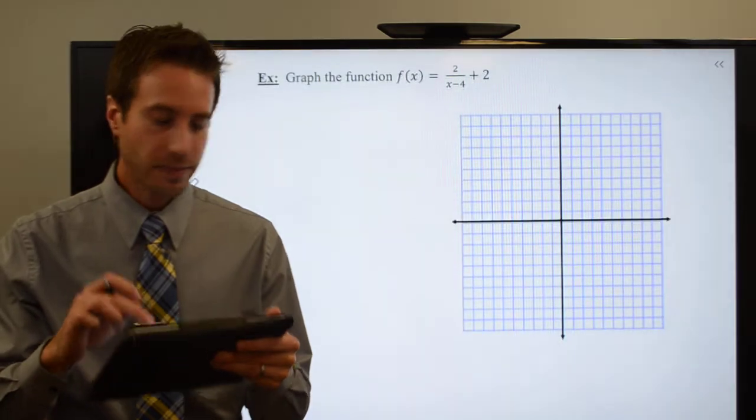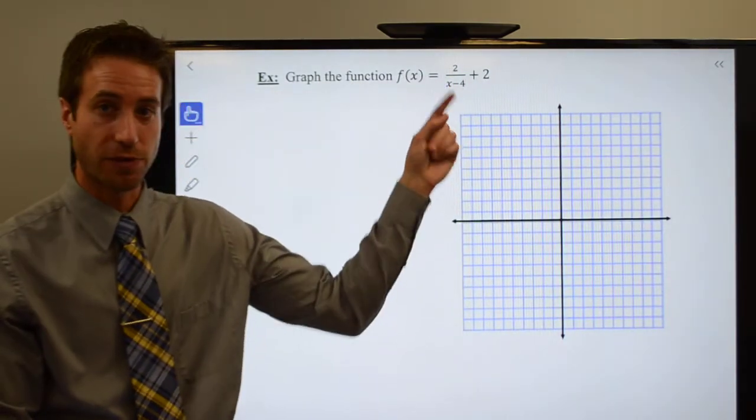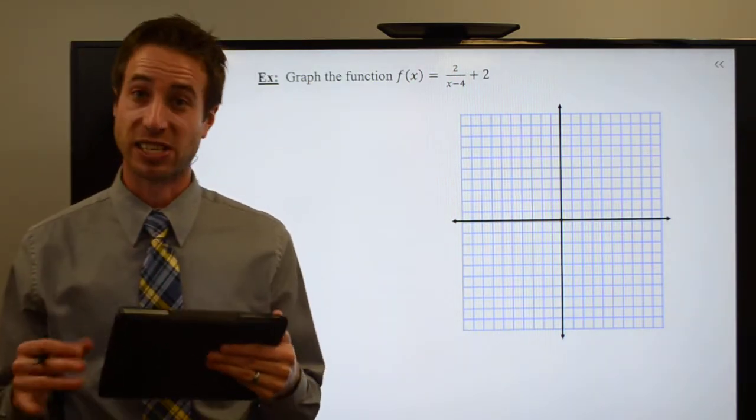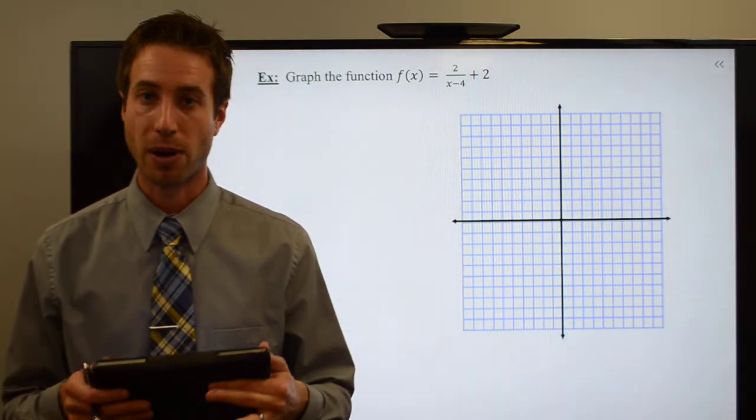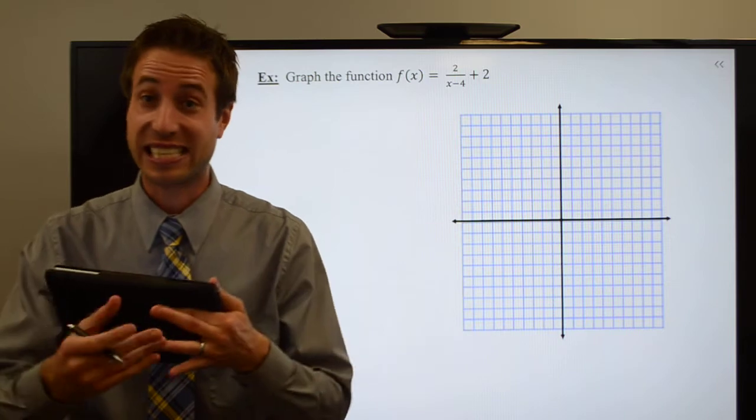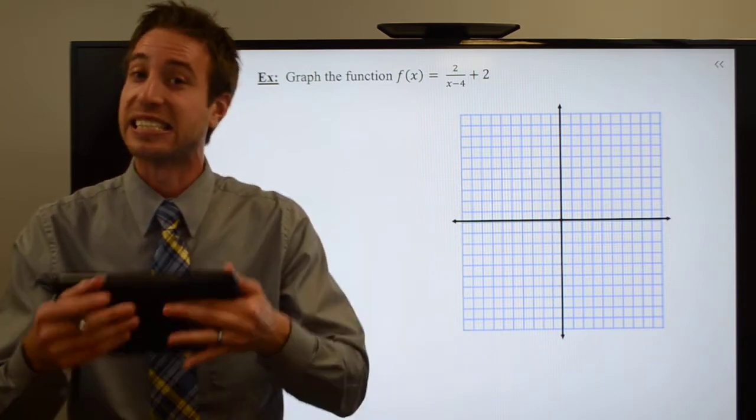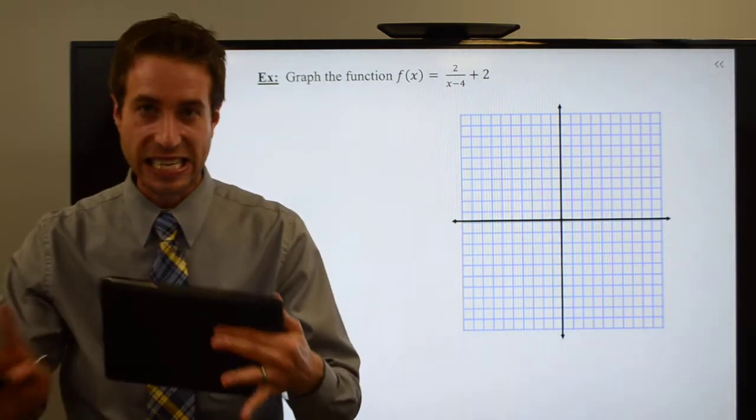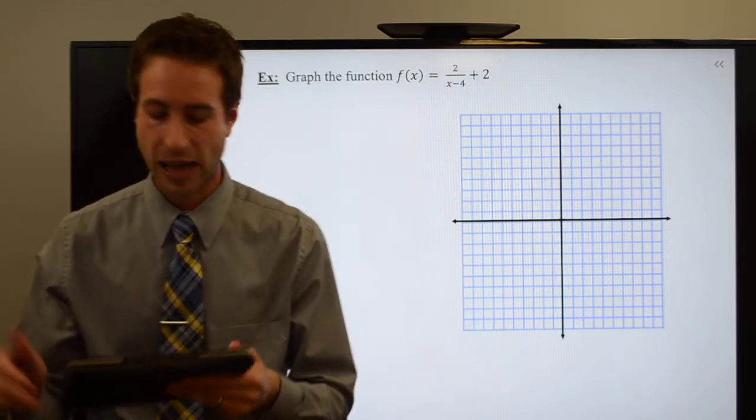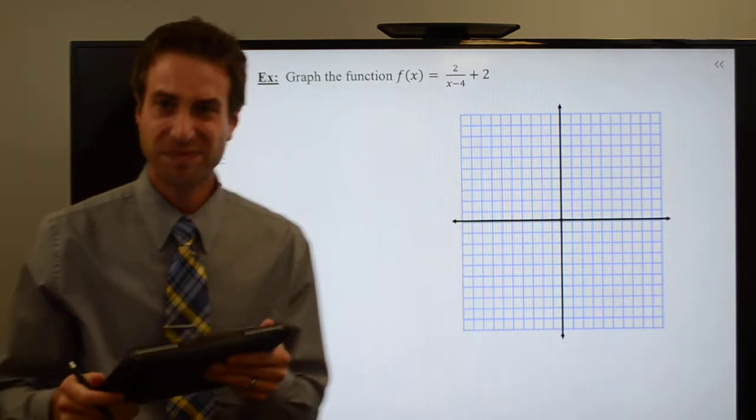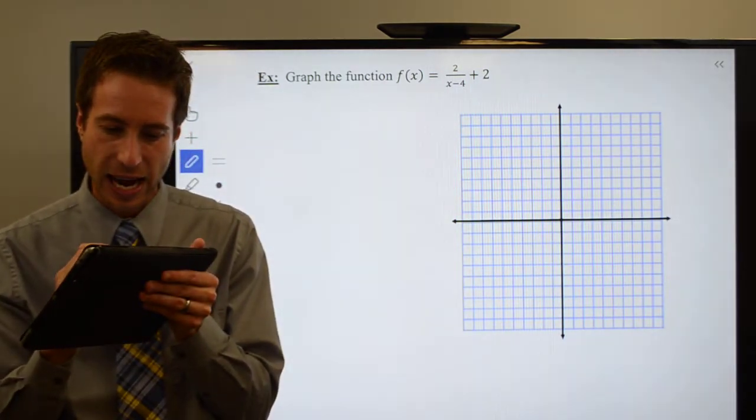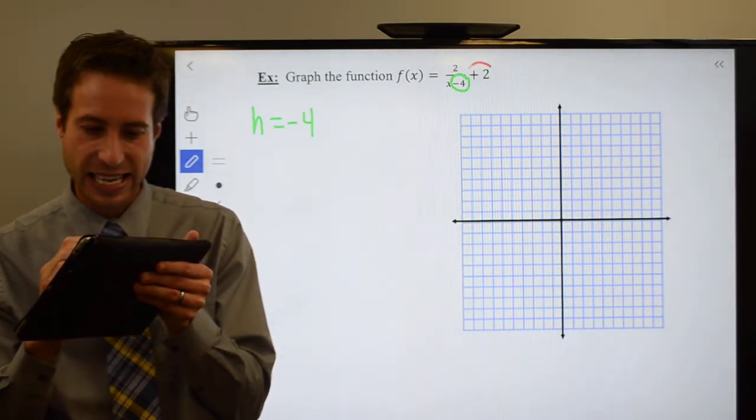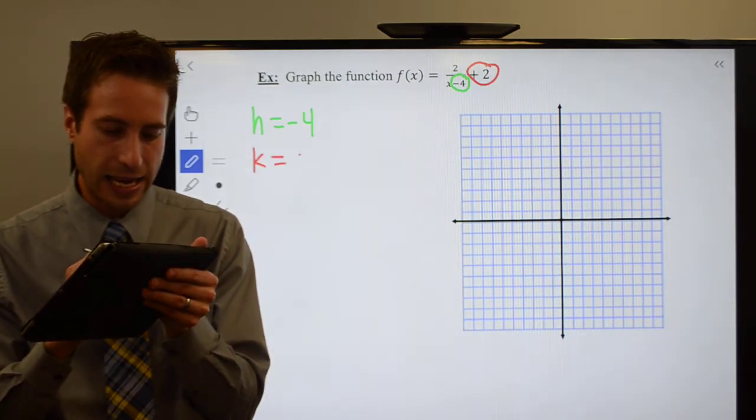So with that in mind, let's take a look at a rational function and graph this function. I love these problems because it's a little bit like putting together a puzzle. You're going to find several of the pieces and see how those pieces fit together to give you the graph of the rational function. I take a look at this and see I have a negative 4, so H is minus 4. And I see I have a plus 2, so that means K has to be a positive 2.